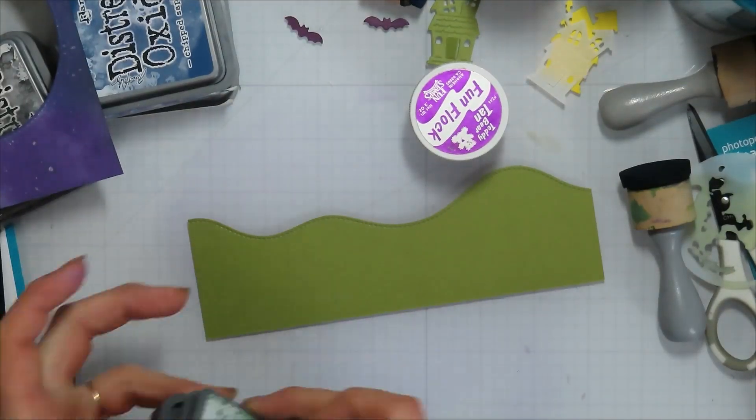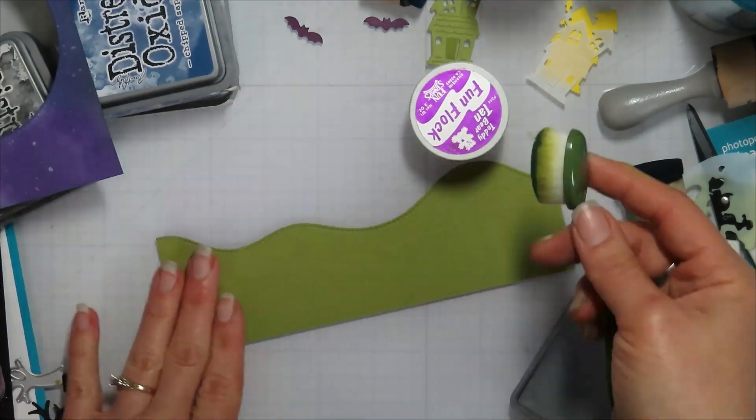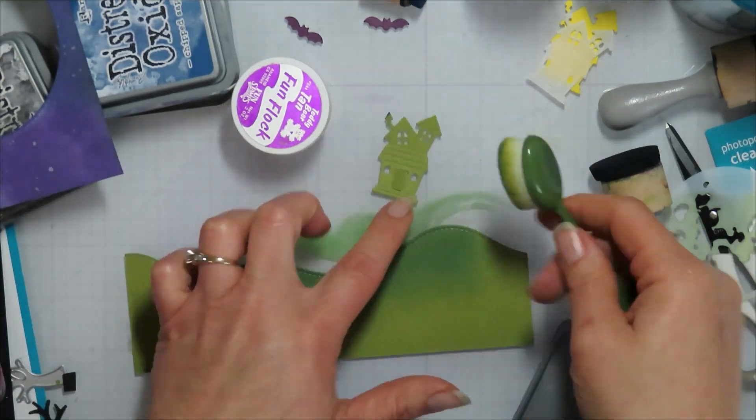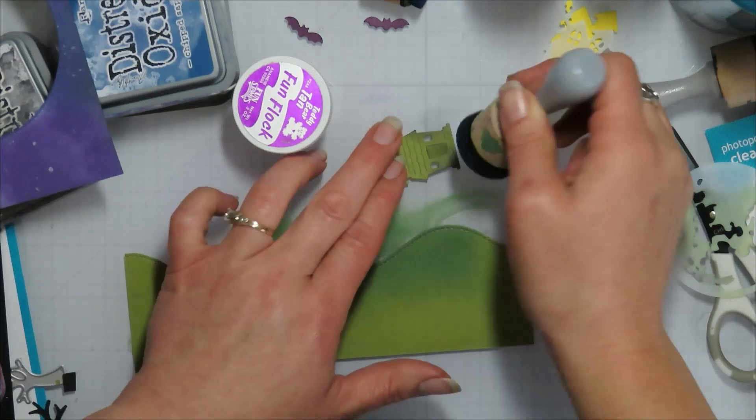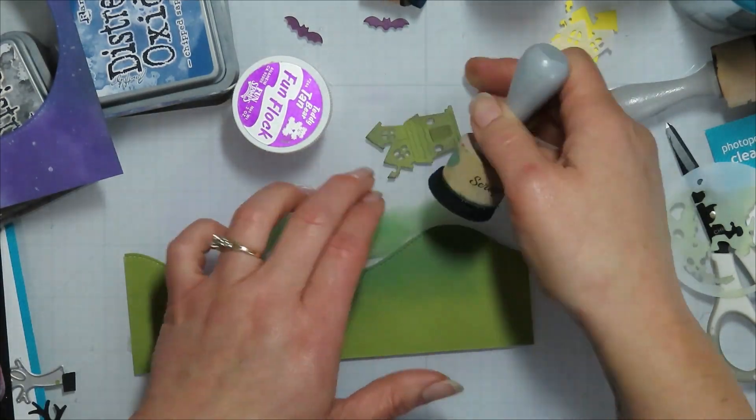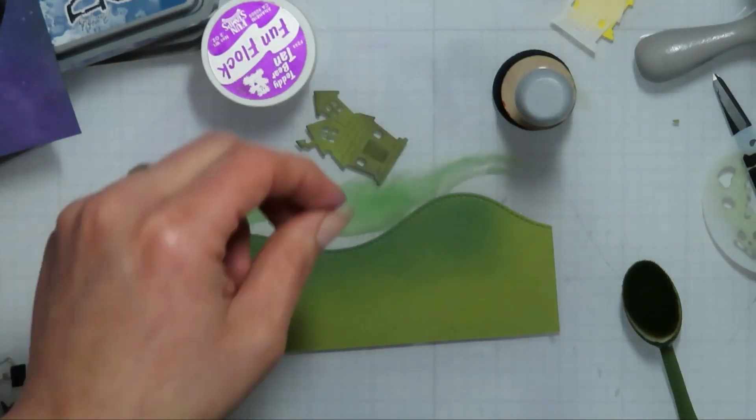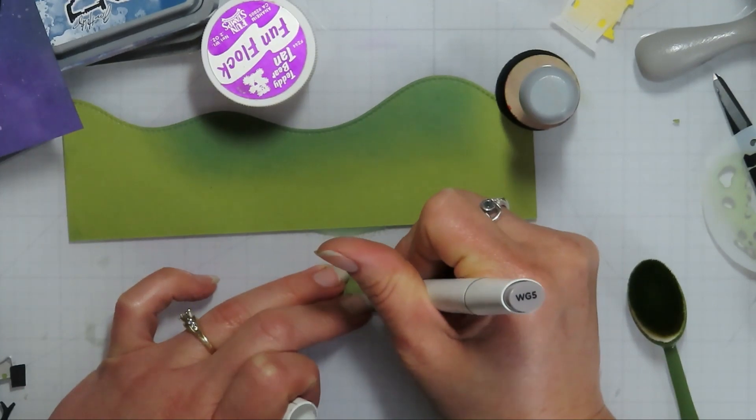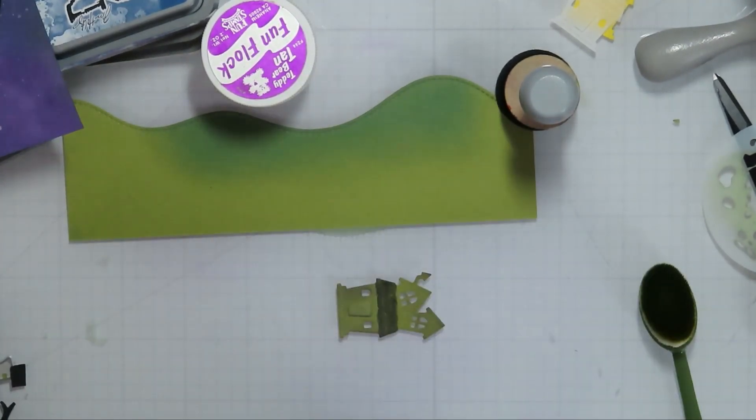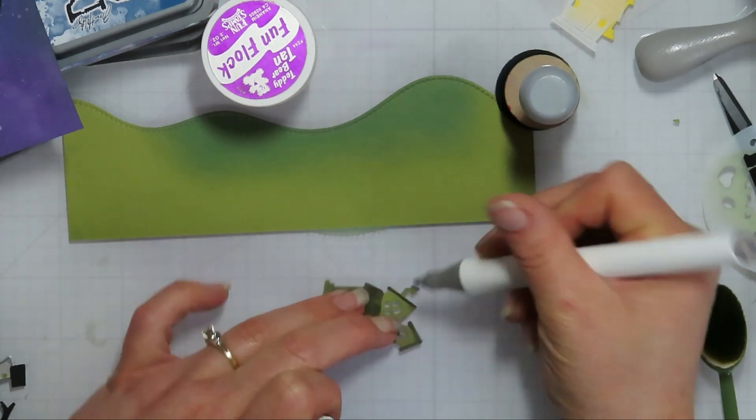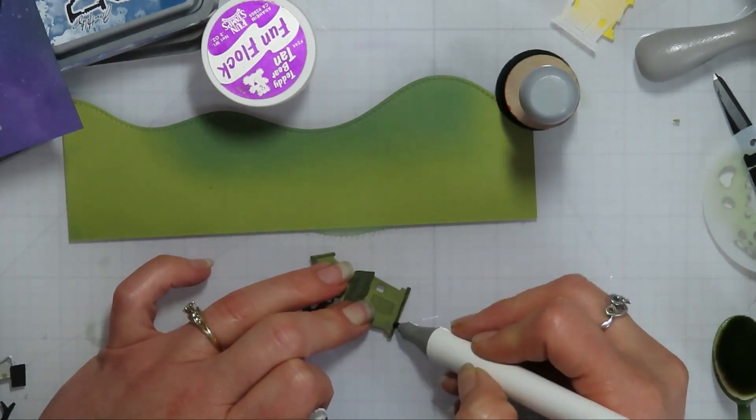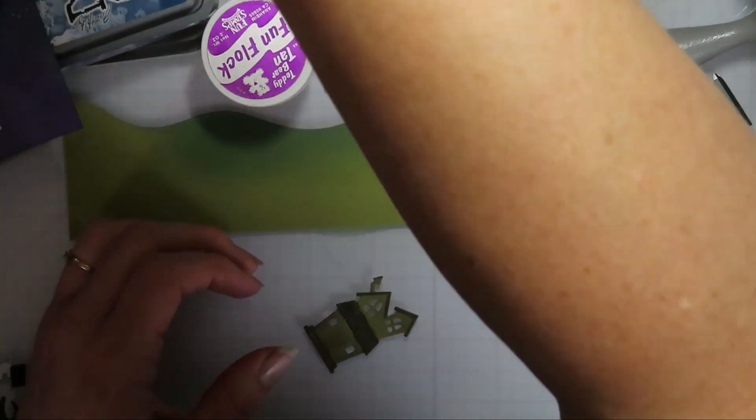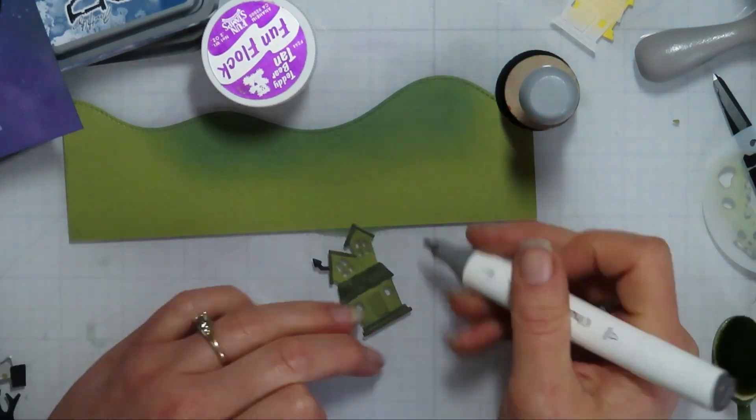so I brought in some, I think this one is a slimline stitched hillside die from Lawn Fawn. I just cut it from some green cardstock. And then I'm just going to add some rustic wilderness to the top there to kind of give it a little bit more depth and dimension. And then for my die cut images, I didn't do coloring this time. I just haven't been in a coloring mood lately, probably because I have a few really heavy coloring involved cards on my plate to make.